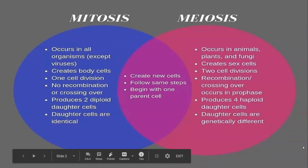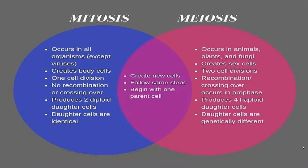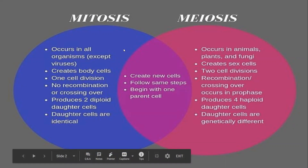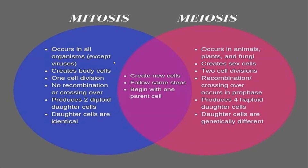The first thing is this nice little Venn diagram. Mitosis occurs in pretty much all organisms except viruses, although there is a lot of debate whether a virus even qualifies as an organism because it is just a group of proteins. But unless you're a virus, if you are a living organism, you do mitosis. Mitosis is what creates your body cells, what repairs wounds, and what allows you to grow. It does consist of one cell division.